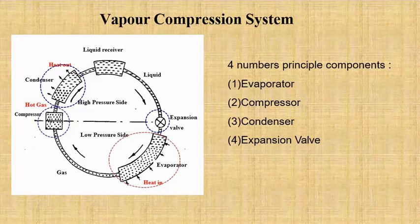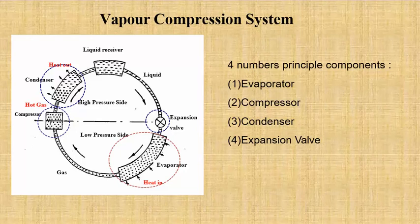In the vapor compression system, we have four components: the evaporator, compressor, condenser, and the expansion valve. The hot gases get entered in the system, by which we are able to compress them, and then the condenser will reduce the heat of the system and the expansion valve allows them to work or move. The condenser and the liquid receiver phase are the high pressure side and the evaporator comes under the low pressure side. In between, the compressor and the expansion valve are located.